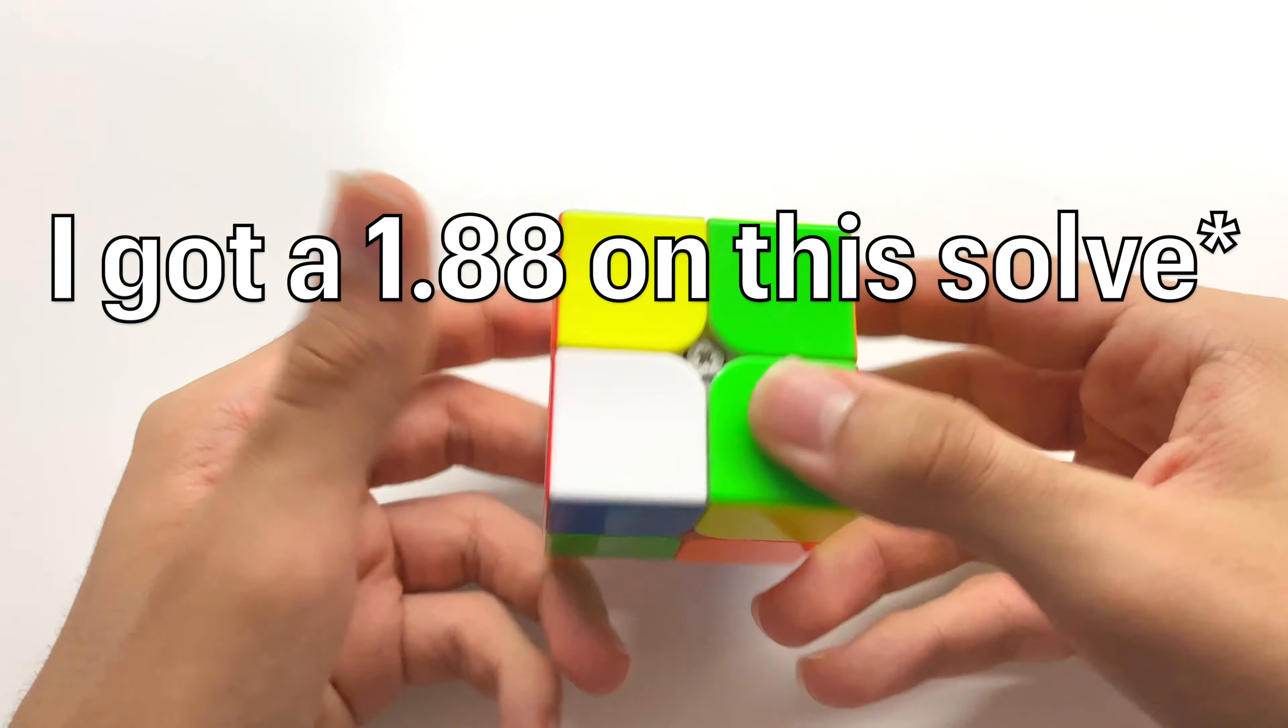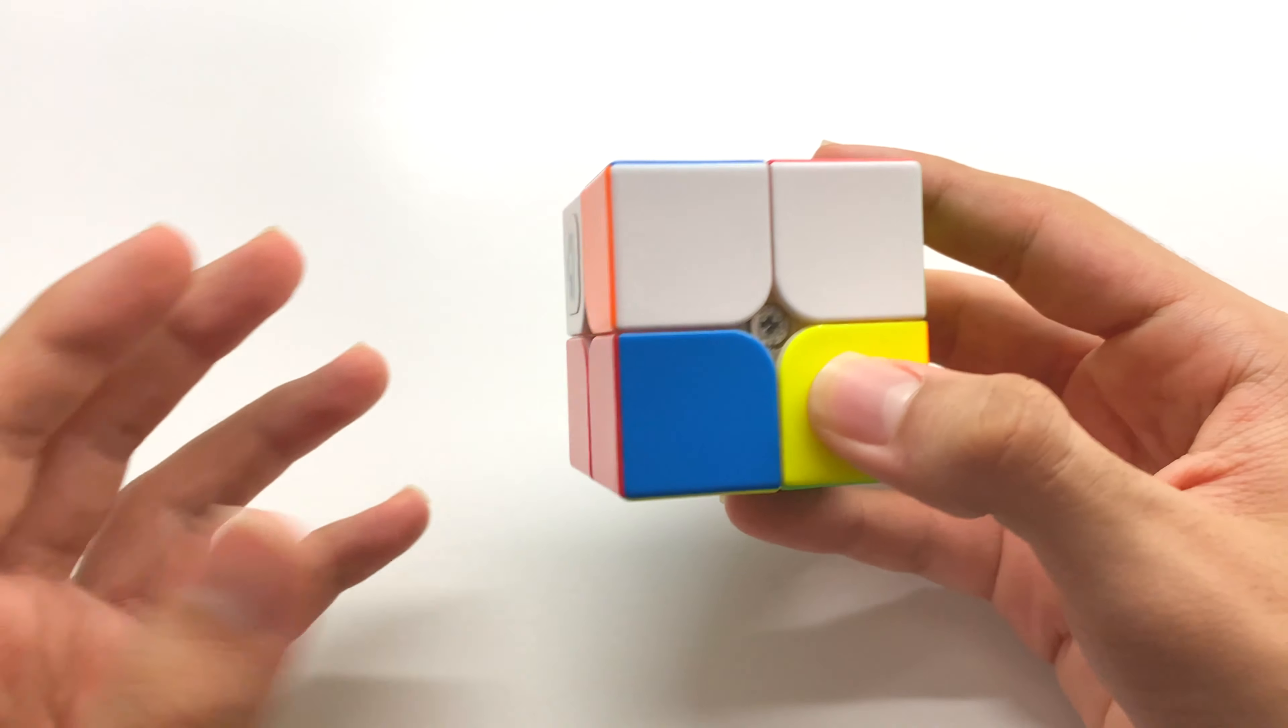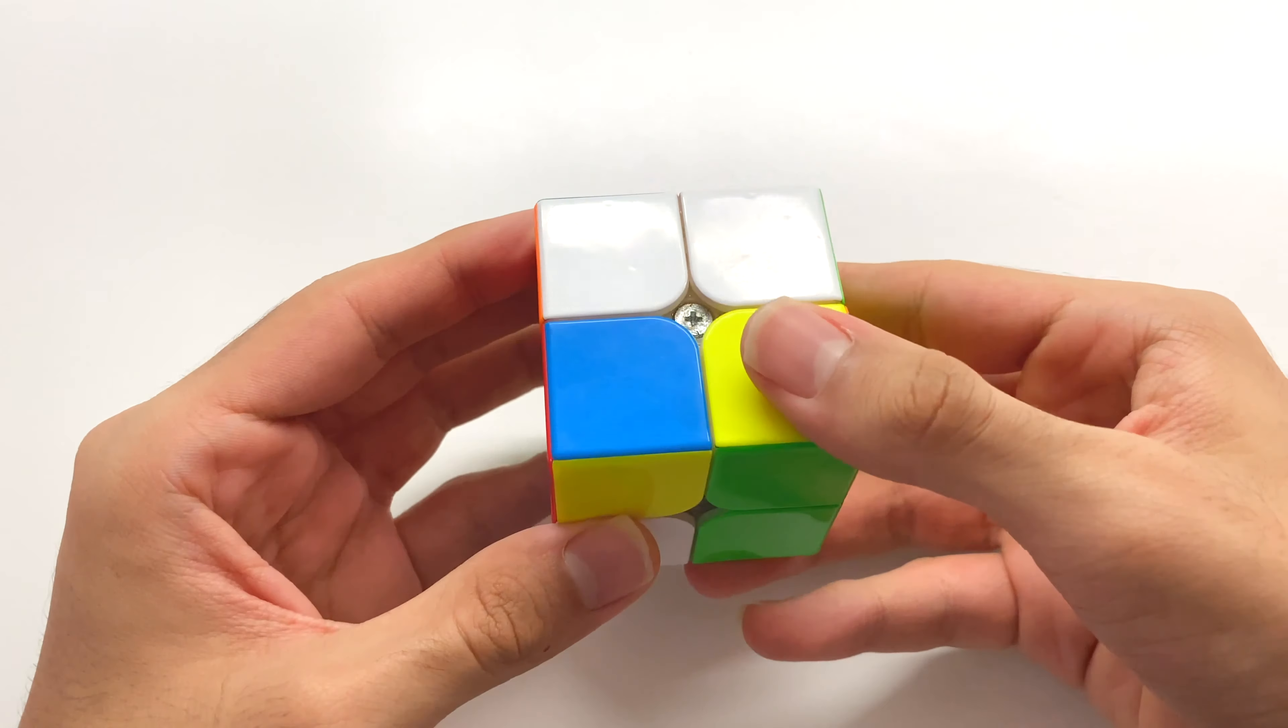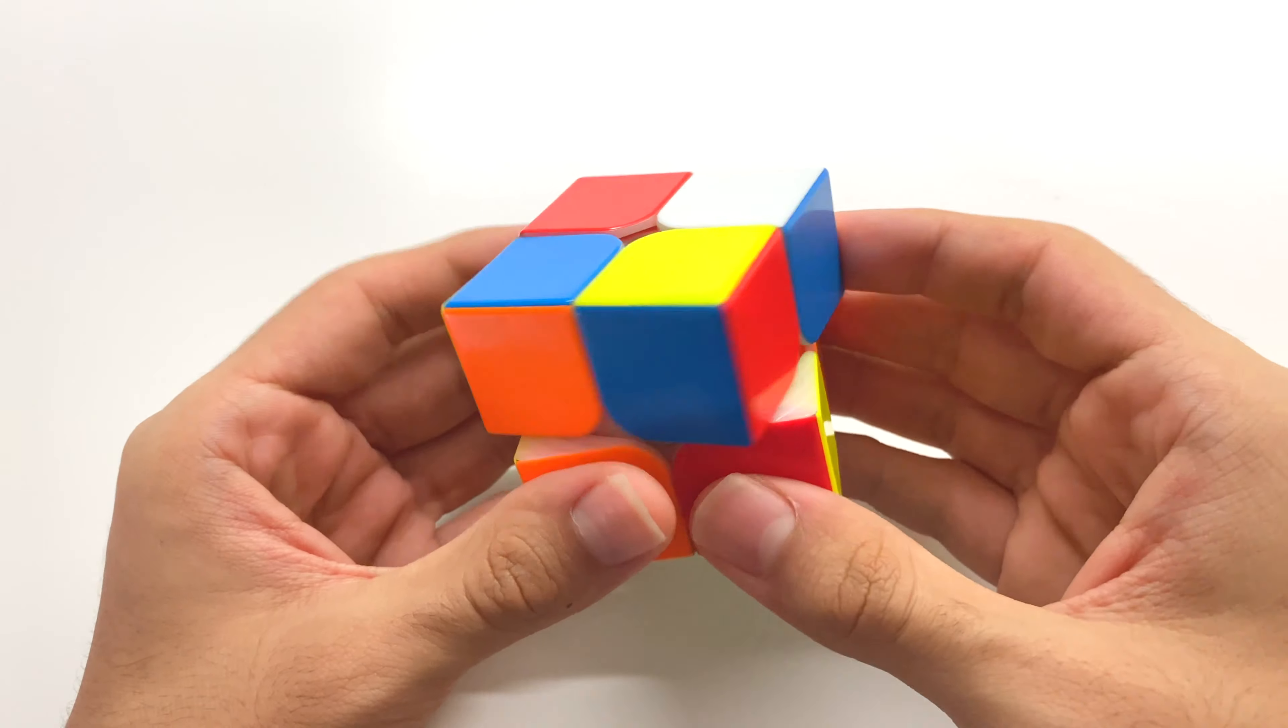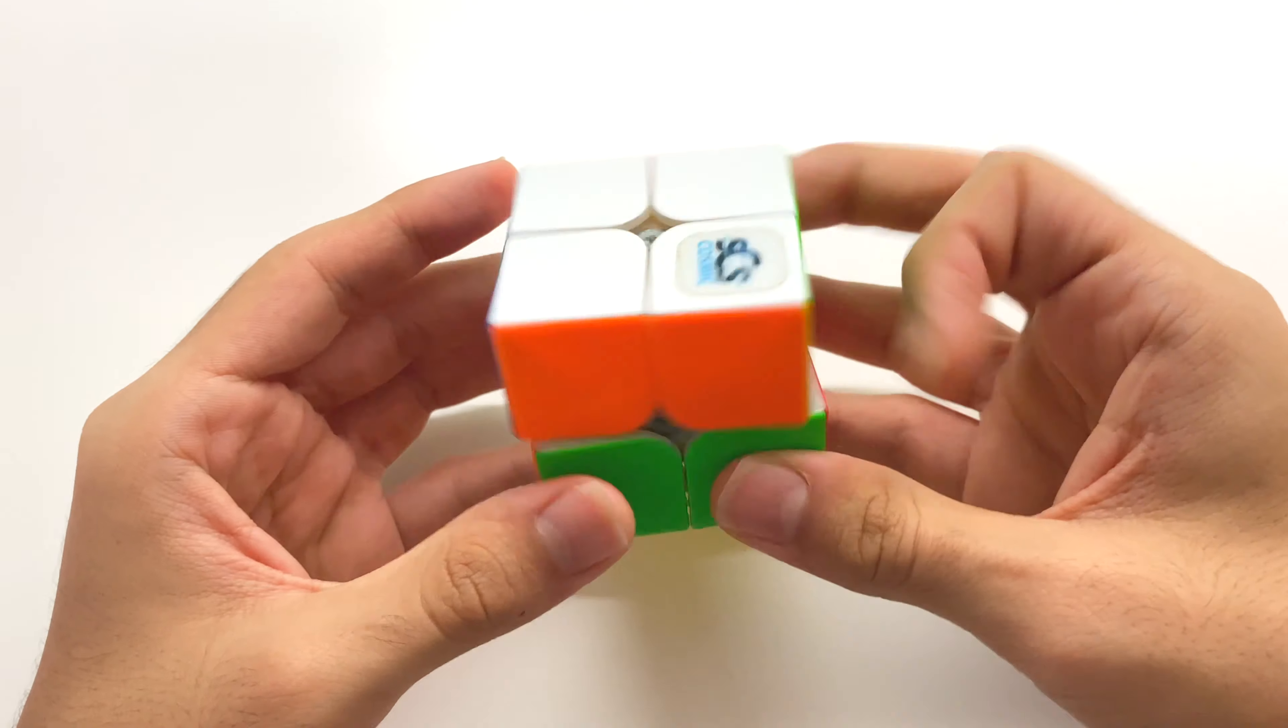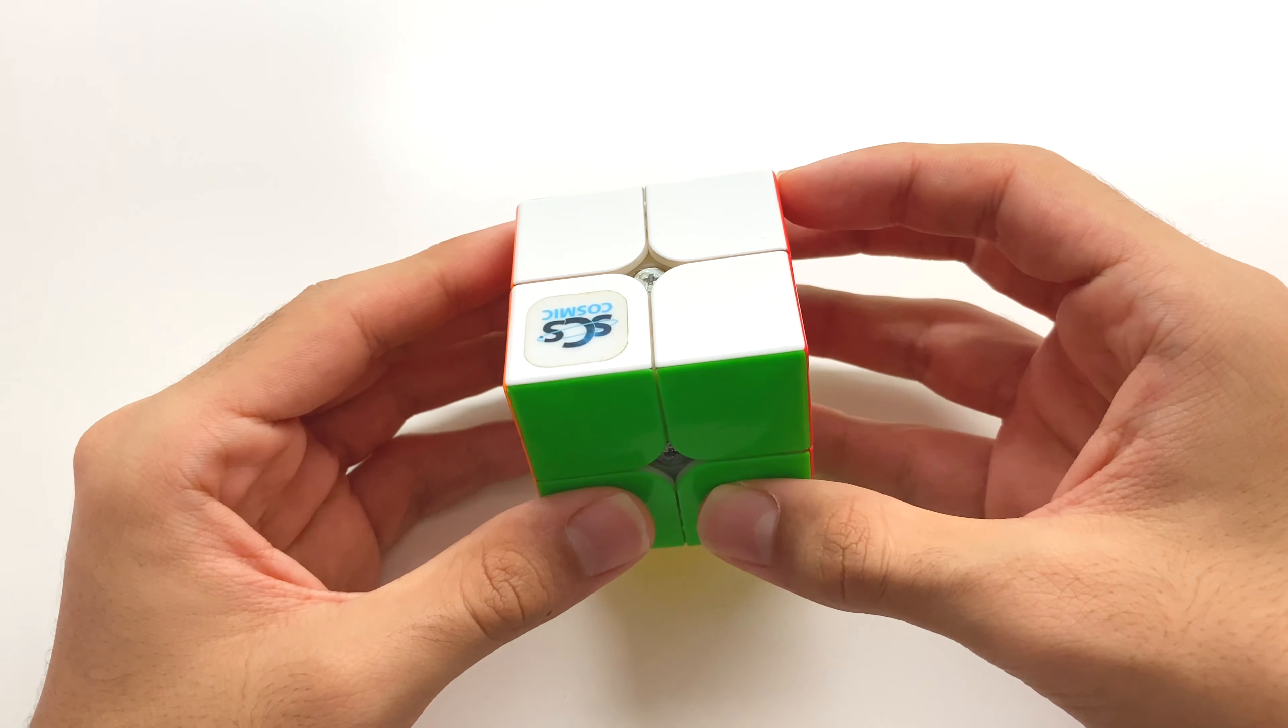What I saw on this scramble was this 3 move green EG1 face, which would give me my bar on the left, but I don't know LEG, so I know I would have to rotate. So what I did to solve this was this. I one looked this solve and I saw it would give me this EG1, so I rotated, solved the EG1 like this and finished with a U prime and a UF. Overall not too bad of a solution and I got a pretty good time for the solve. Let's move on to solve 4.